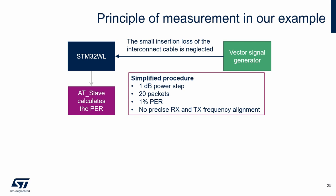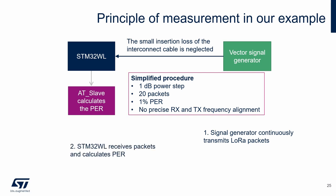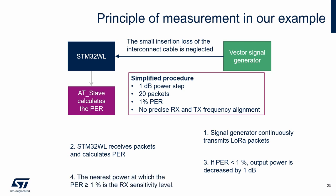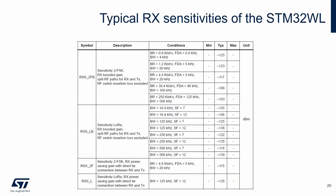There are several main steps of the measurement. First, the vector signal generator continuously transmits LoRa packets with the same frequency and LoRa modulation parameters as the measured device, with output power set above the expected sensitivity level. The STM32WL device receives packets and calculates the packet error rate. If the packet error rate is below 1%, the output power from the generator is decreased by 1 dB and the packet error rate is calculated again. The nearest power at which the packet error rate exceeds 1% is considered the receiver sensitivity level. According to the datasheet, for LoRa modulation with bandwidth 125 kHz and spreading factor 12, the sensitivity is minus 138 dBm.